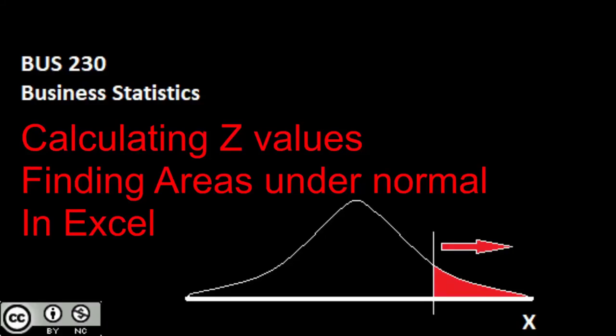In this video, we're going to be taking a look at how to find the areas underneath the normal distribution using Excel. So instead of using our table, we can use this method in order to quickly calculate what the corresponding probabilities would be, and work through our problems as such.